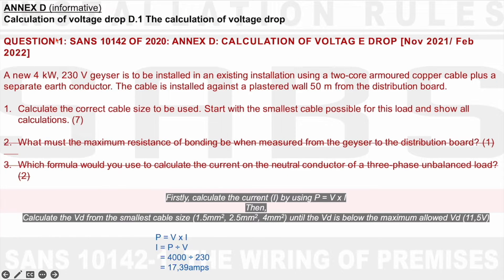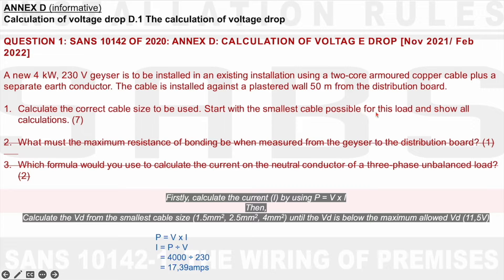Question 1: A new 4kW 230V geyser is to be installed in an existing installation using a 2-core armored copper cable plus a separate earth conductor — that's basically 3 conductors. The cable is installed against a plastered wall, 50m away from the DB. Calculate the correct cable size to be used, starting with the smallest cable possible for this load and show all calculations.